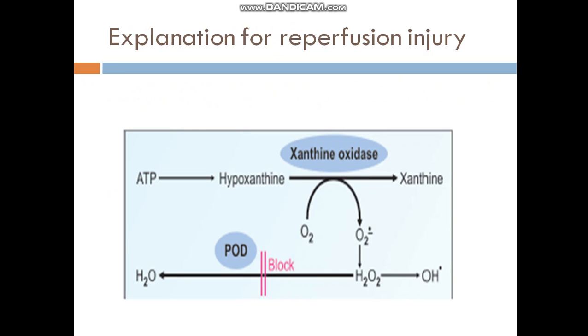This is a diagrammatic representation of how reperfusion injury occurs. Xanthine oxidase converts hypoxanthine to xanthine, and in this process oxygen is converted to superoxide ions.